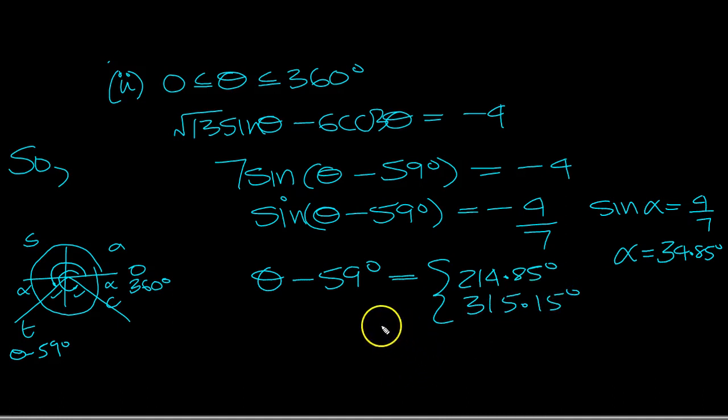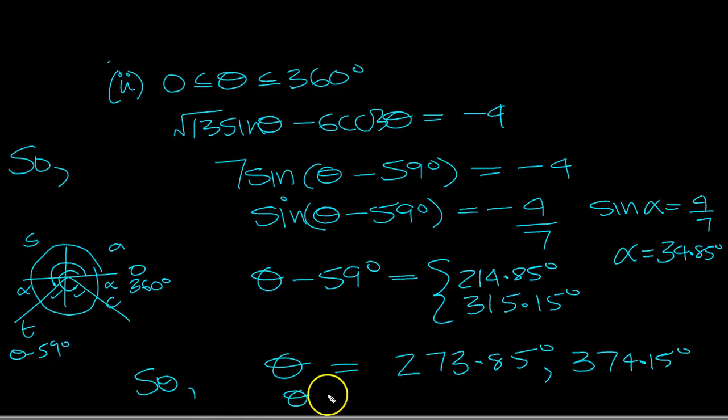Let's add 59 to both of these and see if it's in the range. So that would be 273.85 degrees. And add 59 to this, 374.15 degrees. So theta equals then, taking those in the range, it's 214.15 and 273.85 degrees, that's in the range of theta.